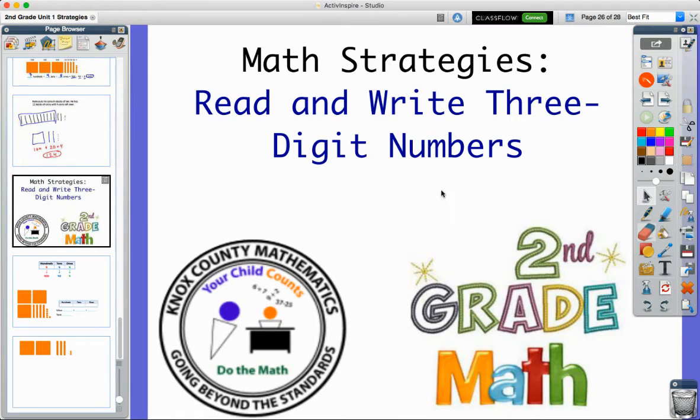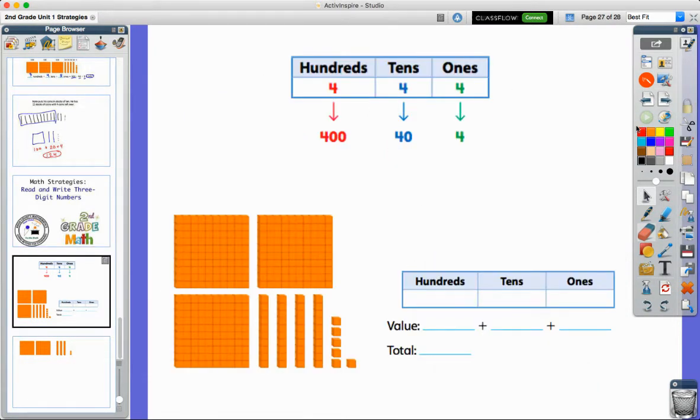So in the ReadyMath book, they're going to start to push us to use what we call a place value chart, where it breaks apart each piece of the place value, the ones, the tens, and the hundreds. And so we start by using that chart and thinking about if there are four groups of 100, four groups of 10, and four ones.